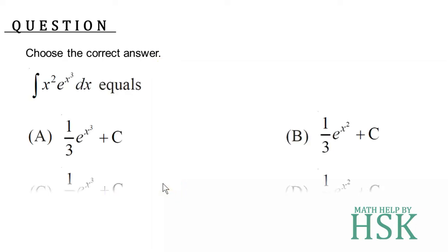The question is: choose the correct answer. The integral x squared times e to the power of x cubed dx equals which of the following four options? To choose the correct answer, I'm going to solve this integral and then we will conclude which is the correct answer.